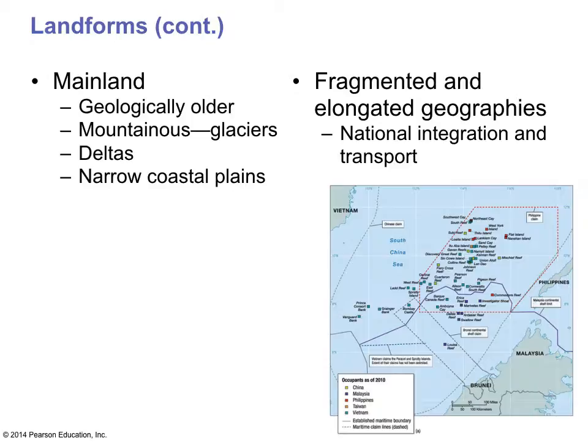There are two types of landforms in this area. The mainland is older, with mountainous deltas and narrow coastal plains. On the other hand, you have a large variety of islands that are very fragmented. This is also an area where there is a lot of transportation and communication activity.